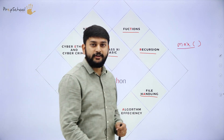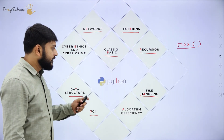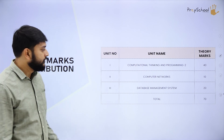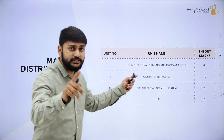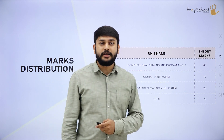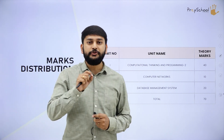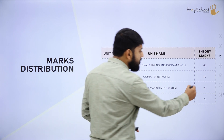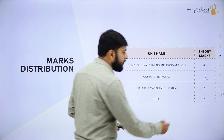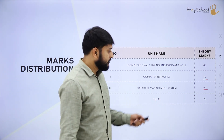Keep a smile on your face — that is the energy for me. Moving on to marks distribution. Your theory marks go as follows: you have three units. Unit 1 — Computational Thinking and Programming — has a weightage of 40 marks with all Python-related concepts. Unit 2 — Computer Networks — has a weightage of 10 marks. Unit 3 — Database Management — has a weightage of 20 marks. Total: 70 marks.